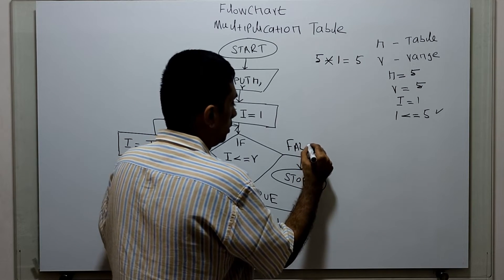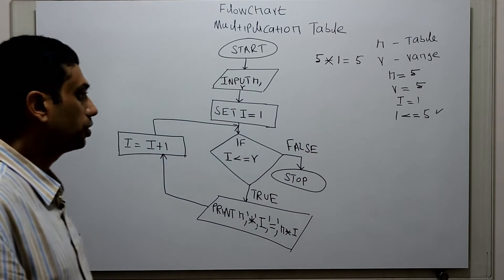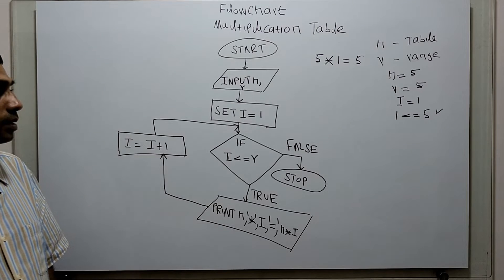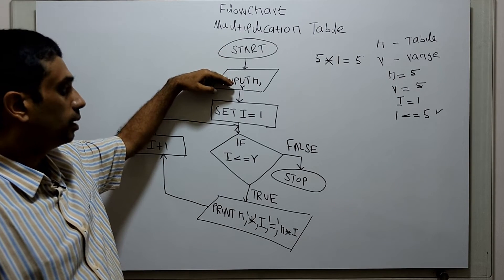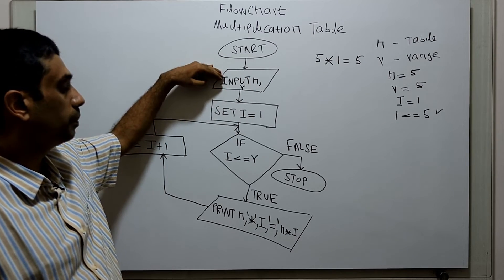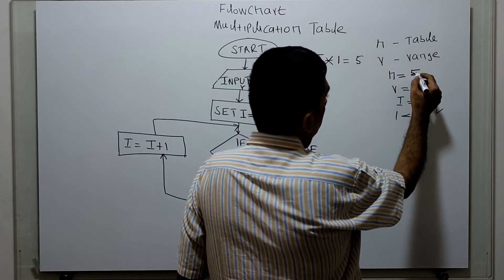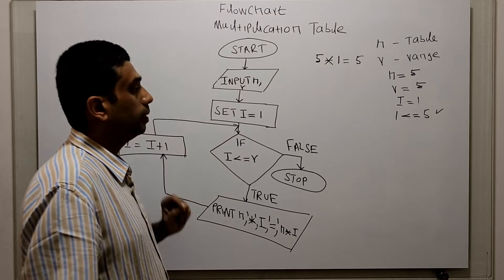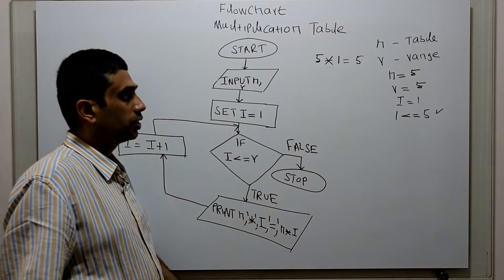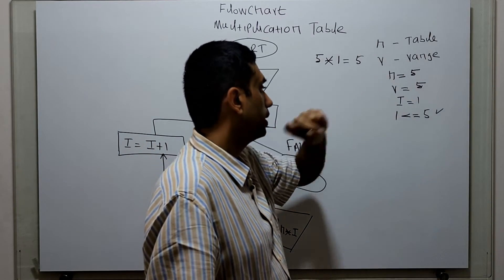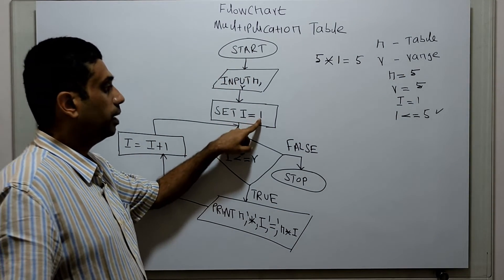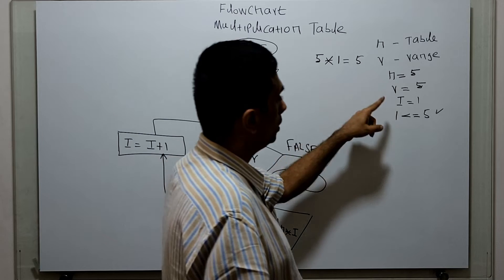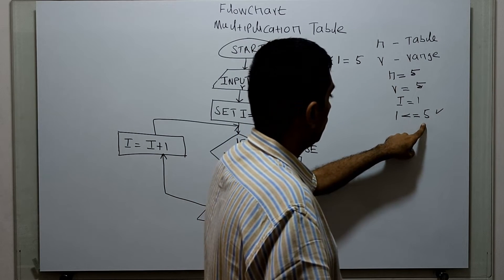If i greater than r, I am ending this flowchart with the logical stop. We will take a sample input and check how this flowchart works. Logical start: I am obtaining values for n and r — n equal to 5, r equal to 5. n decides which table to print, r stands for the range. I am initializing i by 1, checking i less than or equal to r: i is 1, r is 5 — true.